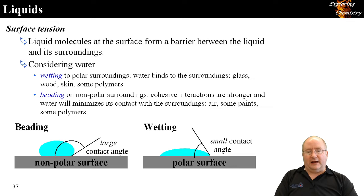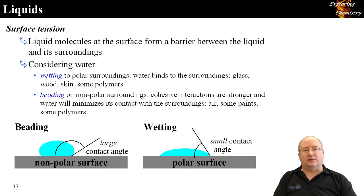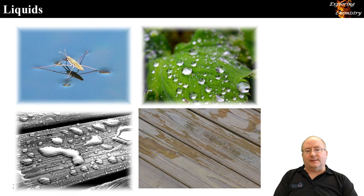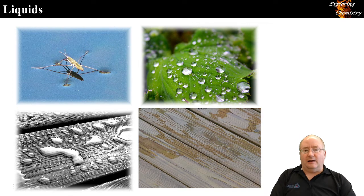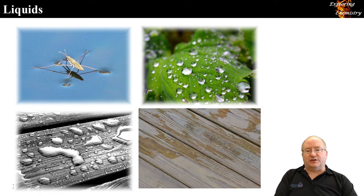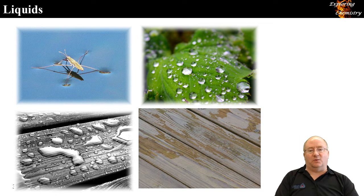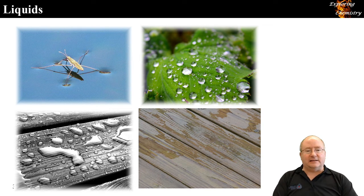We looked at some examples of this. Surface tension provides some insects with the ability to walk on water, beading on some plants, and the treatment of wood — that type of idea.